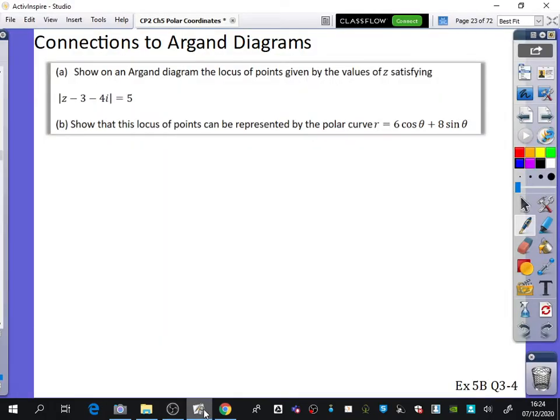They've got at the end of exercise 3b just a couple of random questions that then tries to connect back to Argand diagrams because this is actually a really popular way that this gets examined, connecting together complex numbers from year one with polar coordinates from year two.